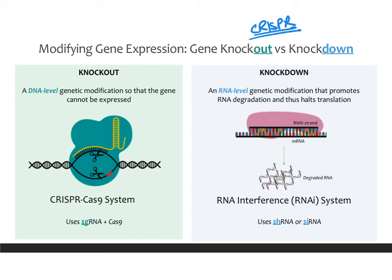As a reminder, there are two things you can do to modify gene expression. You can knock it out, which is usually done with CRISPR, or you can knock it down. Knockouts done with CRISPR are mediated by sgRNAs, whereas knockdowns are mediated by shRNAs or siRNAs, and knockdowns usually occur at the RNA level, whereas knockouts occur at the DNA level.